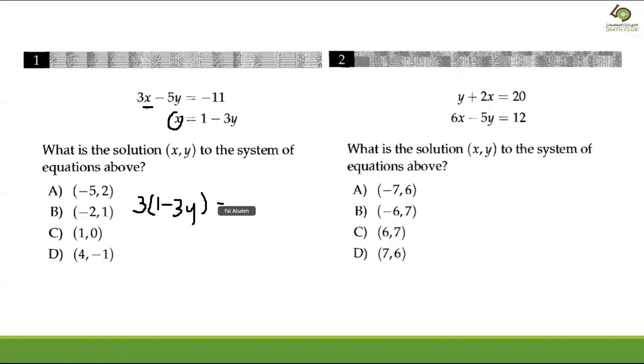minus five y is equal to negative 11. Right, and then you distribute the three, so you get three minus nine y.